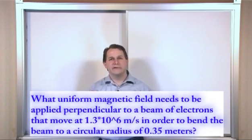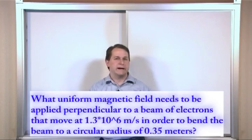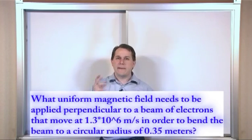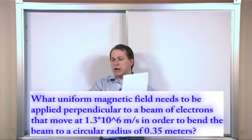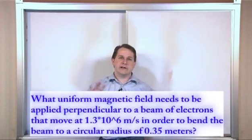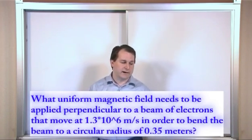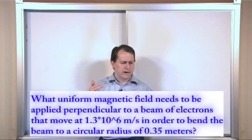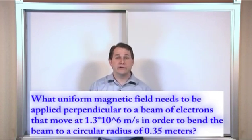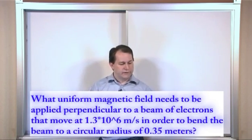Alright, so the trick here is really just to understand what's going on because the math is not a big deal. We have a magnetic field, we say it's uniform, that means it's constant pointed in the same direction and uniform in terms of its magnitude. We have a beam of electrons shooting perpendicular to the field.